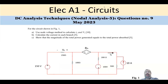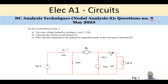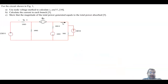Welcome to the series of Electrical A1 Circuit PEO exam. This question is about DC analysis, specifically nodal analysis — question number nine from the DC analysis section, and question number five among the nine DC questions. Nodal analysis is a very common type of question. Here we have a circuit with dependent and independent sources, requiring calculation of node voltages, currents, and power.